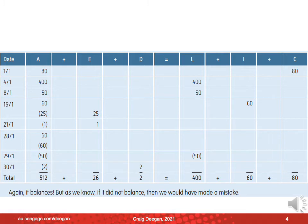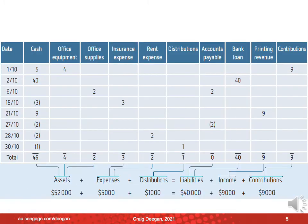This is an example of the tabular approach we use in Chapter 7 to show how certain transactions and events can be recorded, and then how the related balance sheets and income statements might look. We find that this sort of approach was fairly easily understood by students. Here is another example of what we were doing in Chapter 7 — analysing transactions and then showing how that flows through to the financial statements.